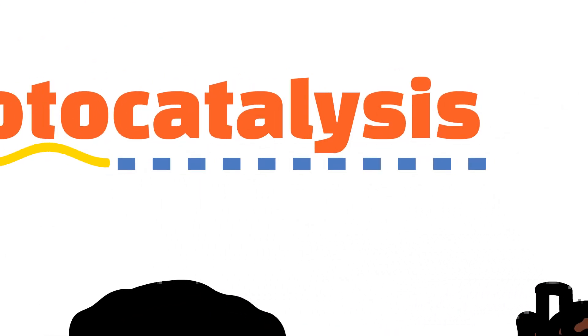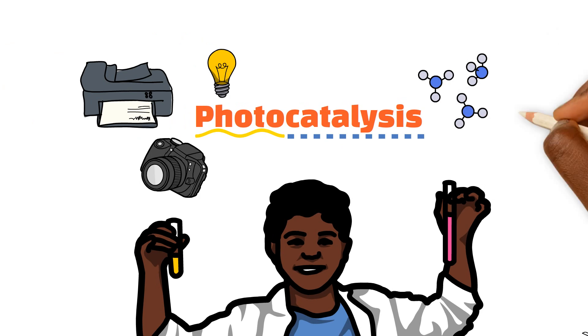The second part is catalysis. This is a process that a lot of chemists use, and it means to increase the speed of a reaction. So using photocatalysis, we can use light to help accelerate the speed at which we break apart the toxic chemicals in our wastewater. This is a fantastic way to clean up our water.